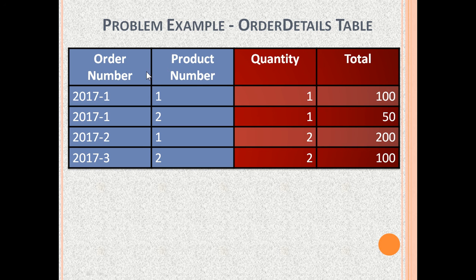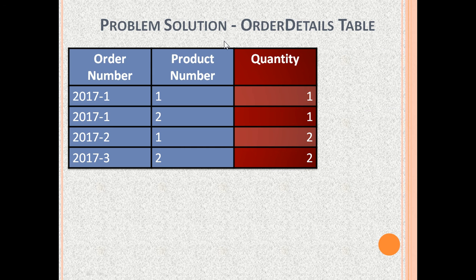The candidate key in the Order Details Table is Order Number and Product Number together. Quantity depends on both Order Number and Product Number. However, the Total column is a calculated value — it is the product of Quantity and Unit Price. So Total does not depend on the key but on something else, and therefore this table is not in 3NF. To convert it to 3NF, we can simply drop the Total column because it was a result of calculation only.